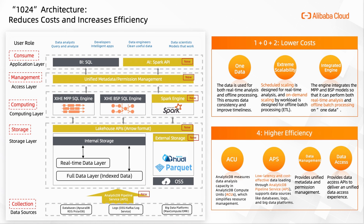Consistent user experience is implemented through four features. Unified billing units, which is ACU: NITB measures data analysis capabilities in NITB compute units, ACUs, which simplifies resource management. APS provides low-cost and cost-efficient data loading through NITB pipeline service, APS, which supports data sources like databases, logs, and big data platforms. Unified data management provides unified metadata and permission management. Unified data access provides data access APIs to deliver a unified data access experience.